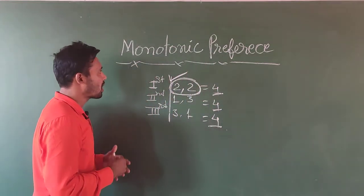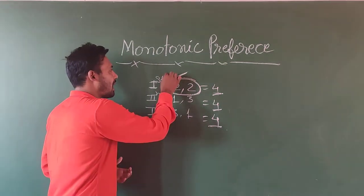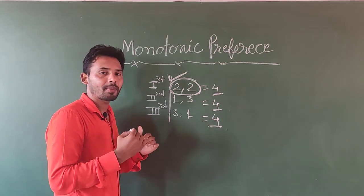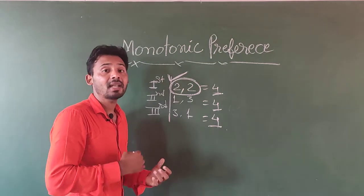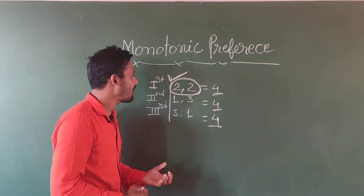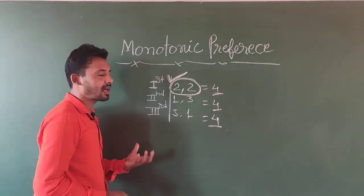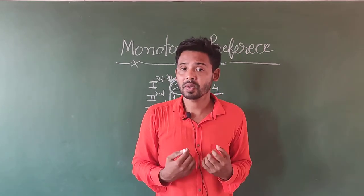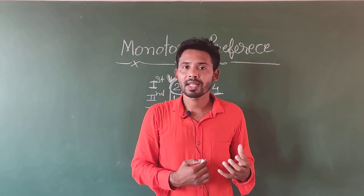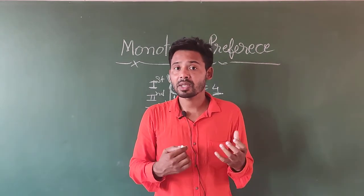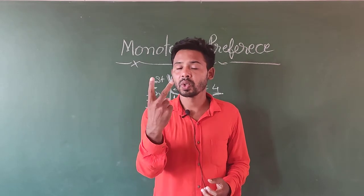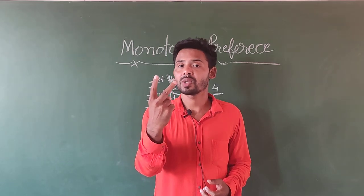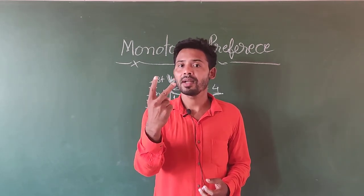So our monotonic preference is where both good a and good b — or good x and good y — are in maximum units, as shown here. That is the condition of our consumption. We call it monotonic preference. We have the condition of monotonic preference where both goods are at their maximum units while a consumer consumes them, buys them, or takes them.